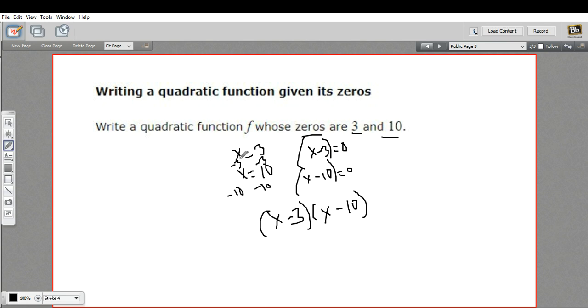So I took my zeros, I wrote x equals each of the zeros, then I set those equations to zero to get my factors. Now I will FOIL this out to get my equation.